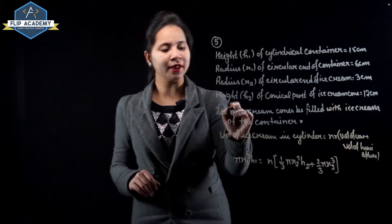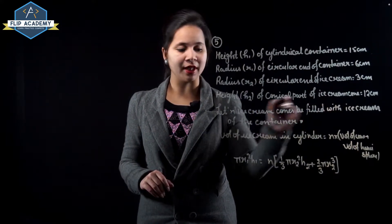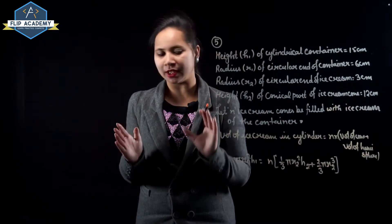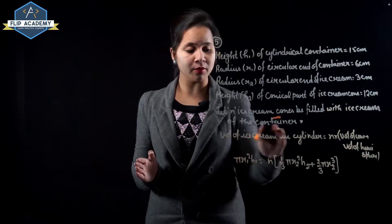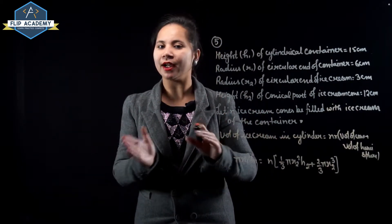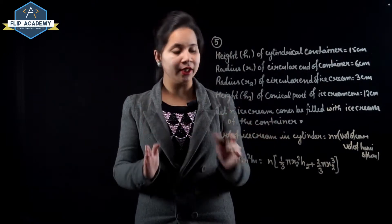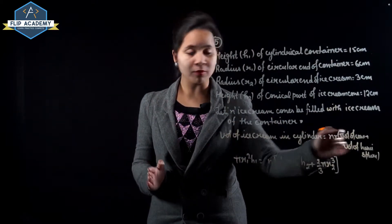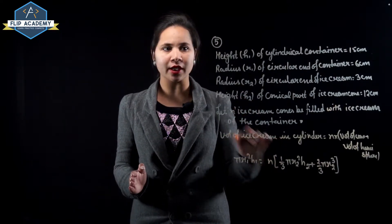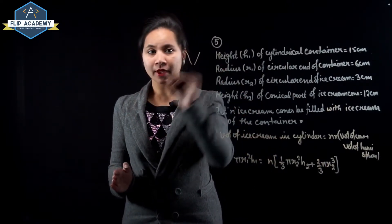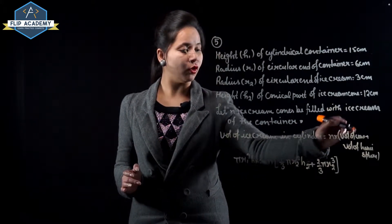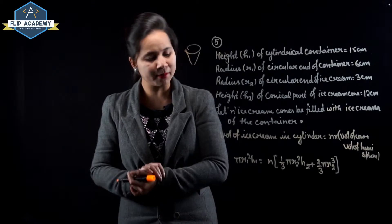Assume that n ice cream cones will be filled with ice cream from the container. The volume of ice cream in the cylinder equals n times the volume of one cone plus its hemispherical top. So we use: n × (volume of cone + volume of hemisphere).